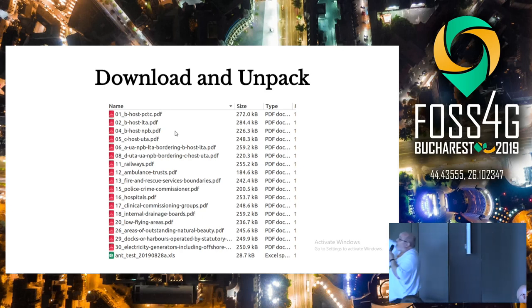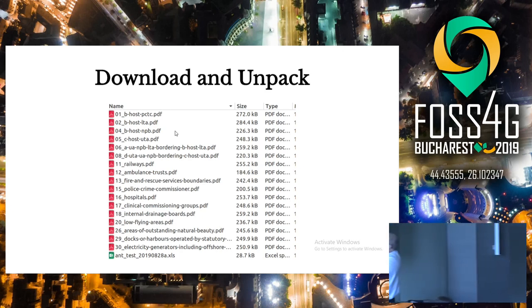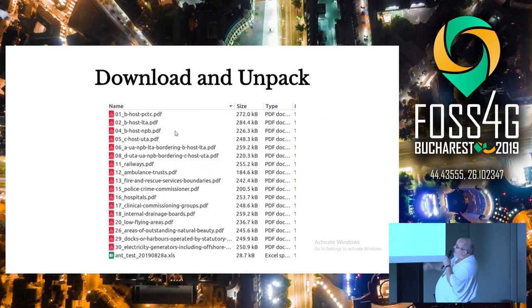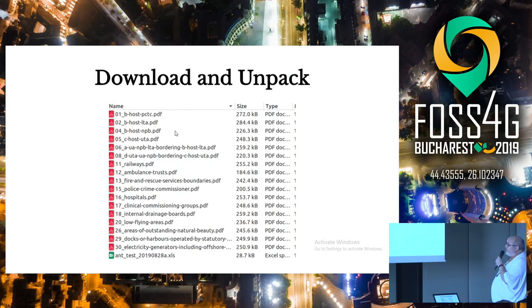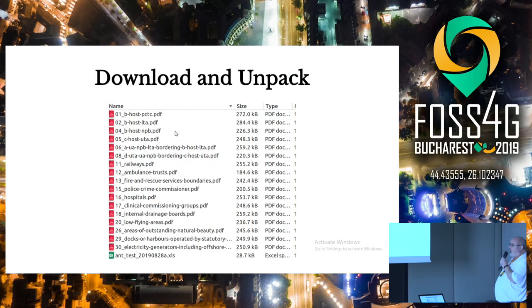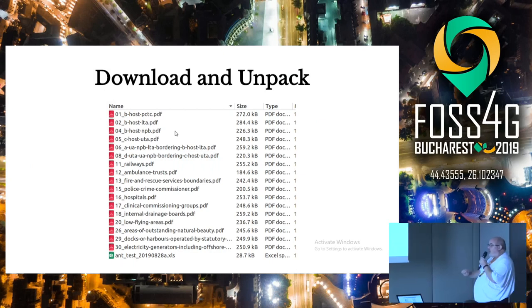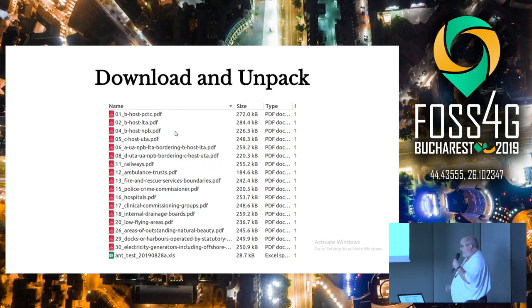So you've got level one, two, four, five, six, eight, and then we get onto things like railways, ambulances, fire, police, hospitals, low-flying aircraft, outstanding natural beauty, docks, electricity generators. The maps are pre-generated using a template.